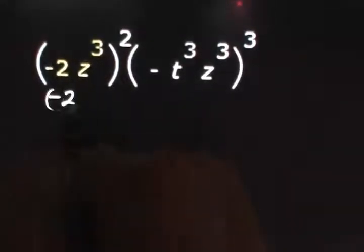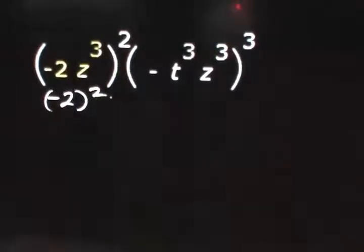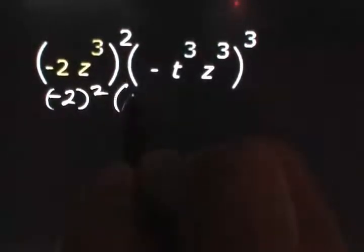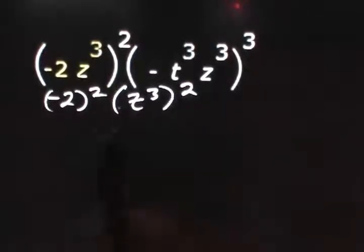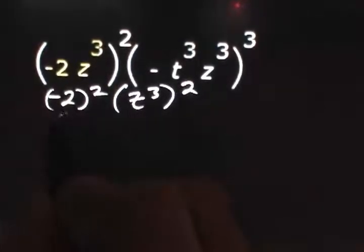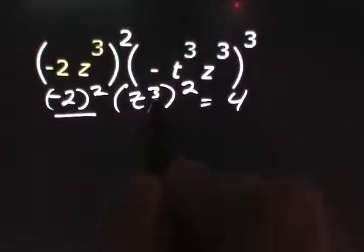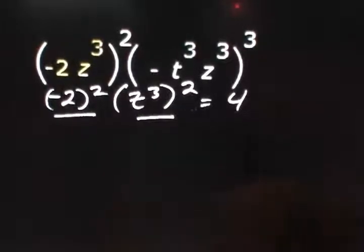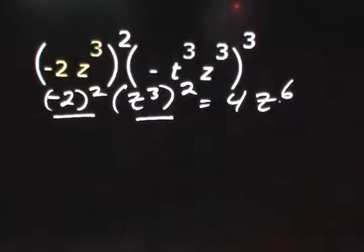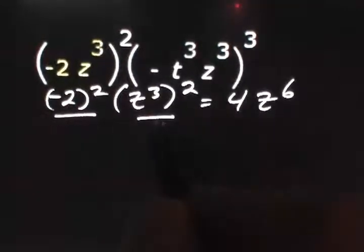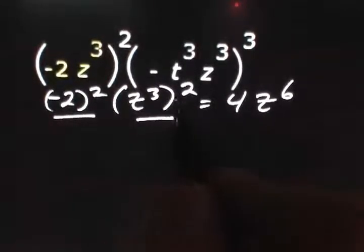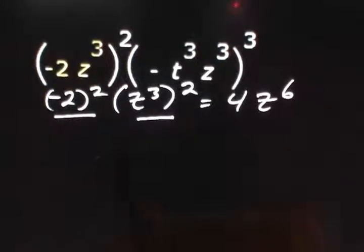We take negative 2 and raise it to the second power, and multiply that by z to the third raised to the second power. Negative 2 squared is equal to 4, and z to the third squared is equal to z to the sixth. Recall that when we take a power and raise it to a power — z to the third squared — we multiply the exponents: 3 times 2 is equal to 6.